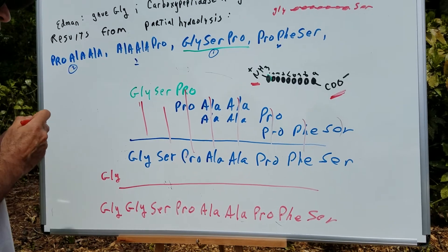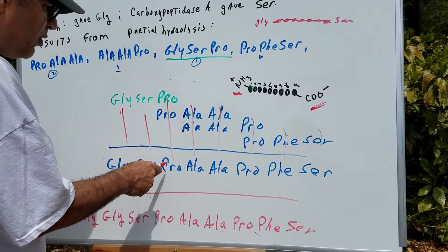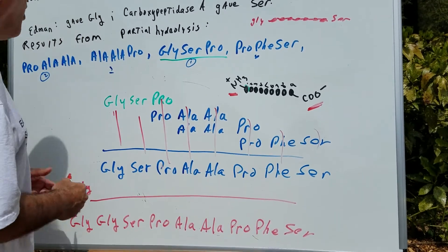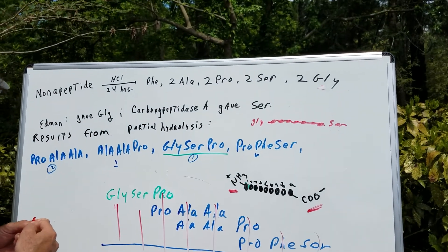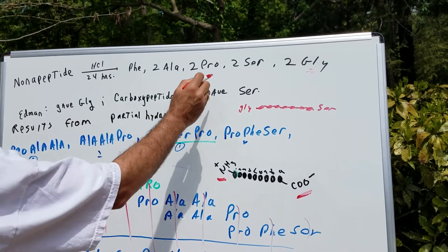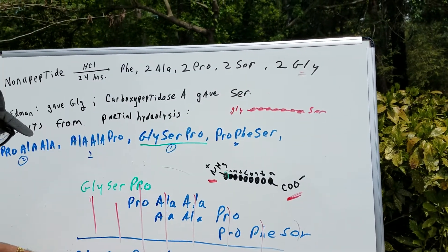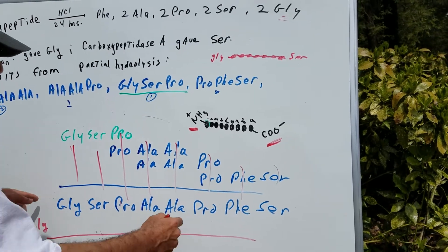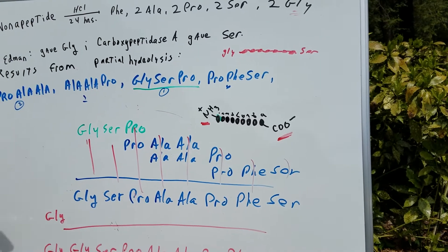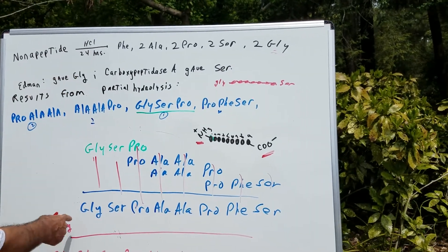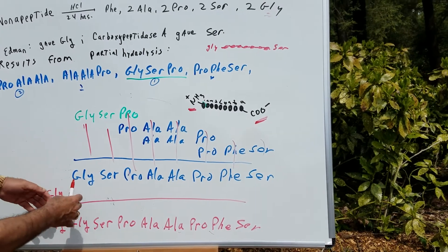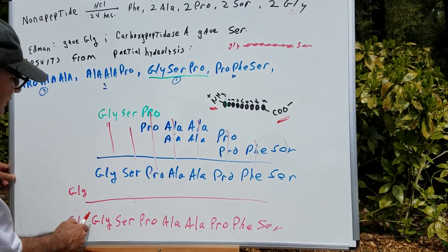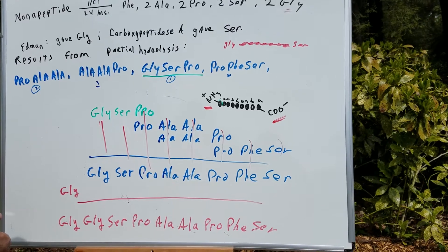Stop right there and let's have a look — are we done? Counting gives us eight. That's an octapeptide, but it said it was a nonapeptide. So the question is, what's missing? Well, we see from the hydrolysis results that we have two Gly's, but if we stop here there's only one Gly. So the question is, do we put the extra Gly on the left side or the right side? Well, the Edman degradation said it gave Gly, so that means the other Gly had to be on the left side — to represent the N-terminal.